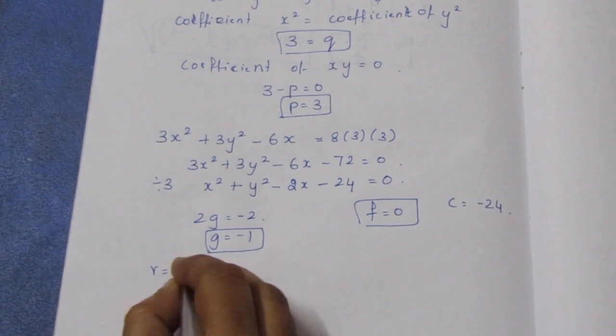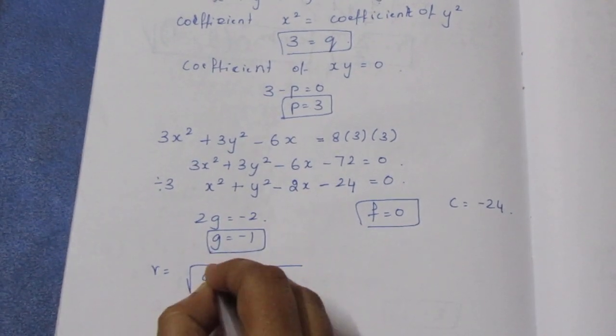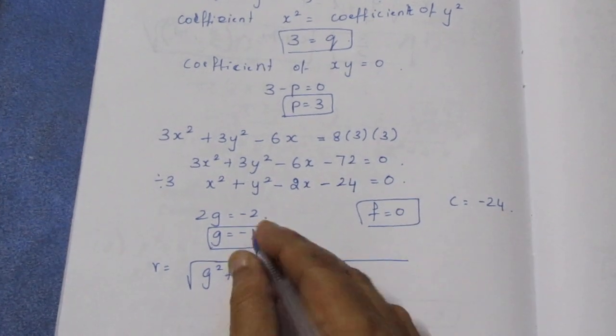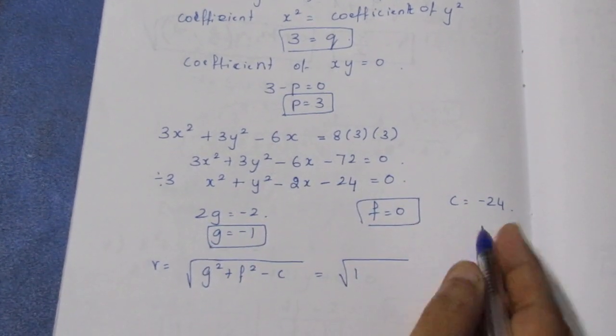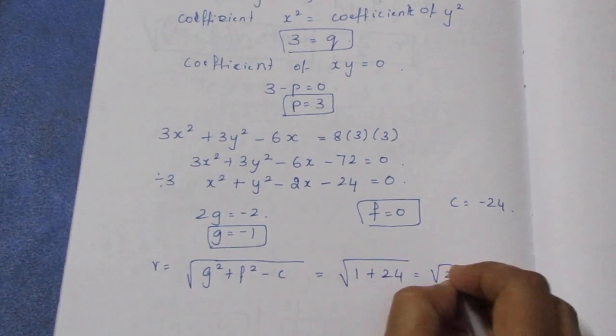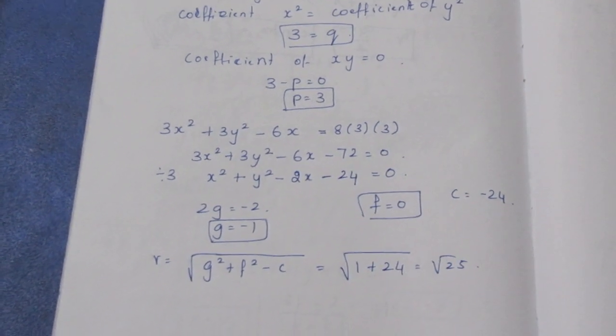Radius equals root of (g² + f² - c). So g² is (-1)² = 1, f² = 0, minus c is +24. This is √25. So radius = 5.